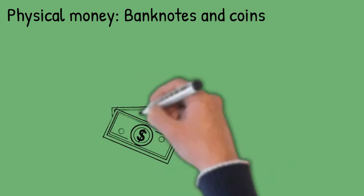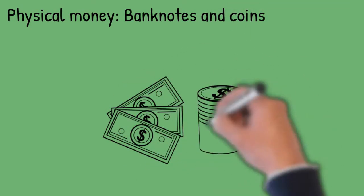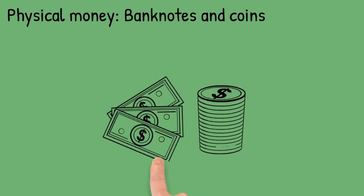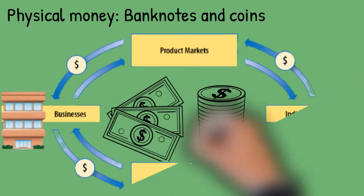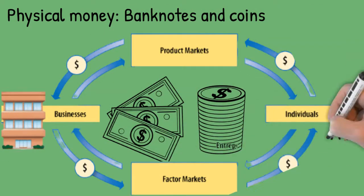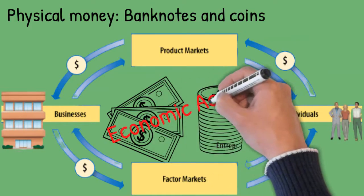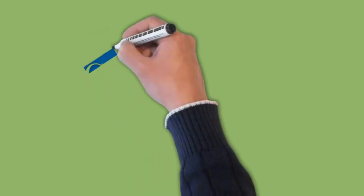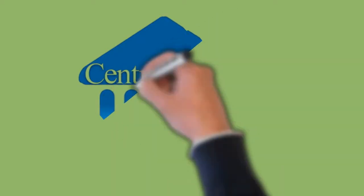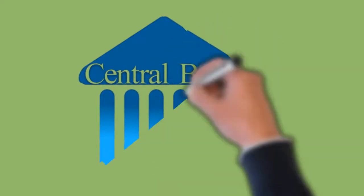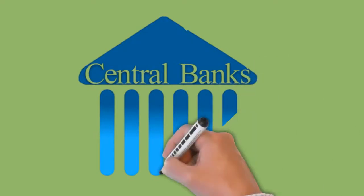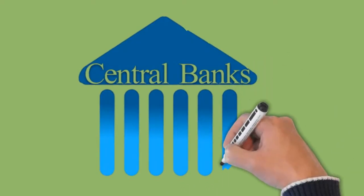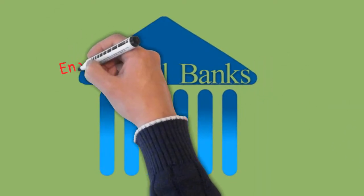The simplest form of money, as we know, are the banknotes and coins. Money is the medium of exchange for goods and services, and all countries rely on it for economic activities. A central bank of the country is responsible for printing the amount of currency for circulation.